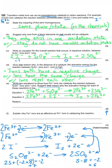The overall equation, once all iron-containing species are cancelled out, is: 2I⁻ + S₂O₈²⁻ → I₂ + 2SO₄²⁻ — matching what we had in part C.